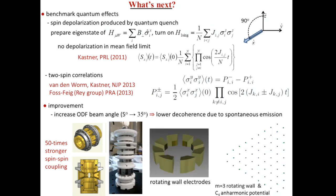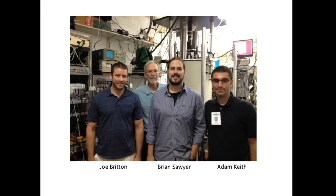One feature of the new trap is we're going to have a larger number of rotating wall electrodes to implement an M=3 rotating wall. If this works, it would be nice because in our present system we have a triangular lattice in the center of the plane but the boundary is elliptical. As you go from that M=3 symmetry to a different symmetry on the boundary, there are necessarily crystal defects. With an M=3 rotating wall, we can match the boundary with the underlying crystal symmetry and make more perfect crystals. Adam, a grad student at University of Colorado, worked on the code that calculates the modes of our planar crystals.